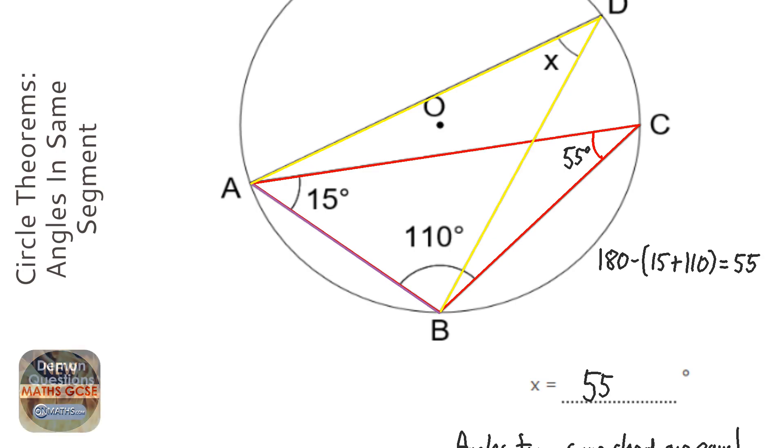We've got the 55 on this line here. So when they're coming from the same chord - and a chord is just like a diameter that doesn't have to go through the center, it's just a line across the circle - when they're coming from the same chord they are always equal.